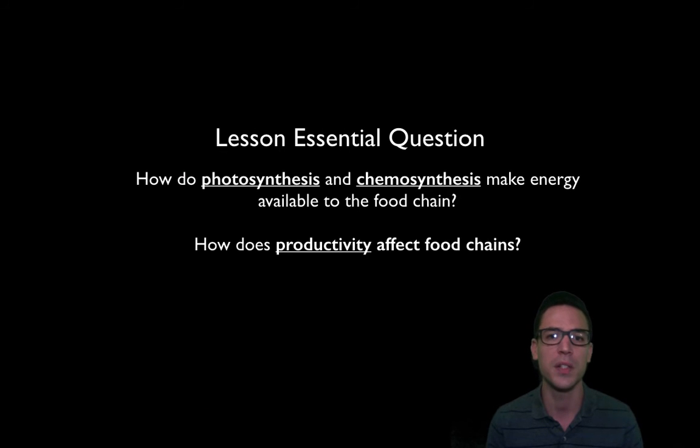We're going to have two lesson essential questions today. First is how does photosynthesis and chemosynthesis make energy available to the food chain? I underline those terms because those are terms you should be able to explain and describe by the end and really understand how do they capture energy for the rest of the ecosystem. And then finally we'll talk about the term productivity, something I underlined, you should be able to explain that term and understand how does productivity affect the rest of the food chain.